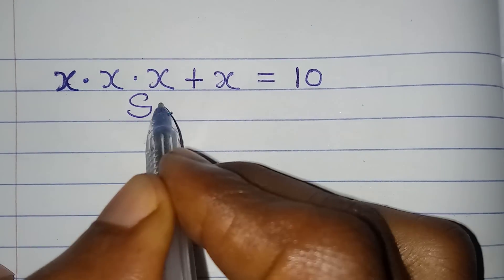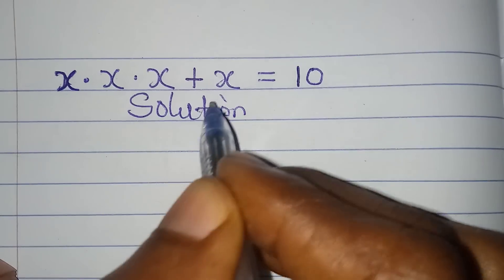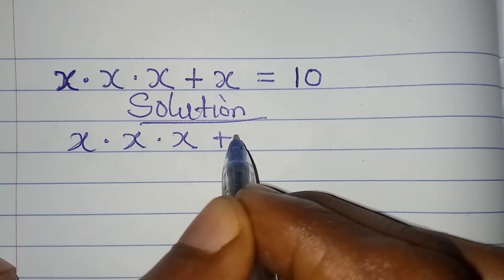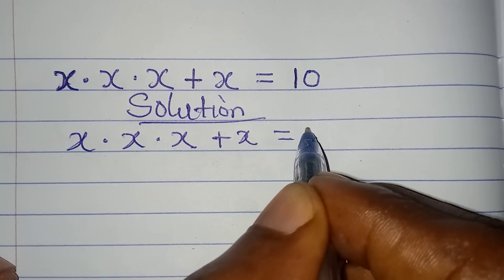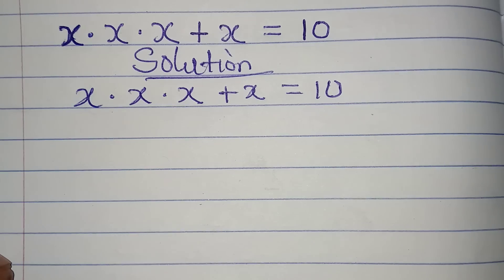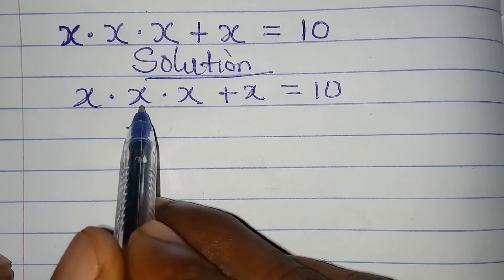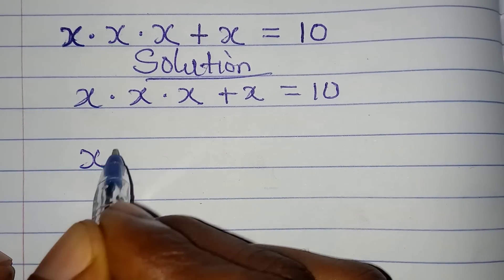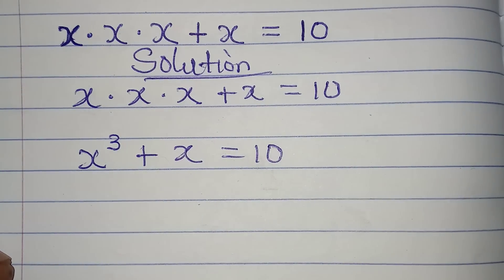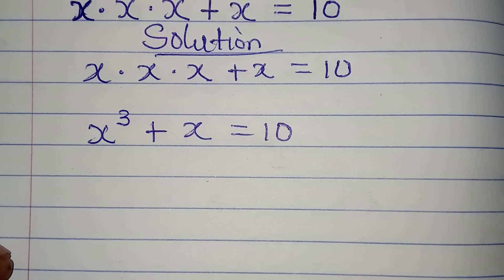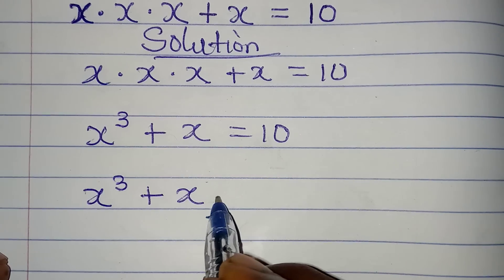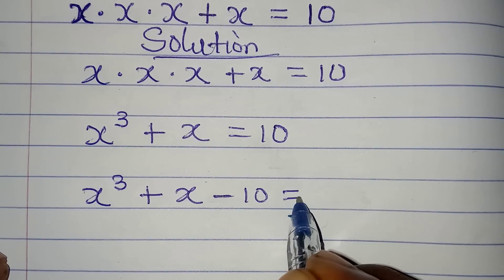Let's solve this problem. We have x times x times x plus x equal to 10. The first step is to multiply — following BODMAS, x times x times x gives us x to the power of 3. So we have x cubed plus x equals 10. Bringing everything to the left-hand side: x cubed plus x minus 10 equals 0.